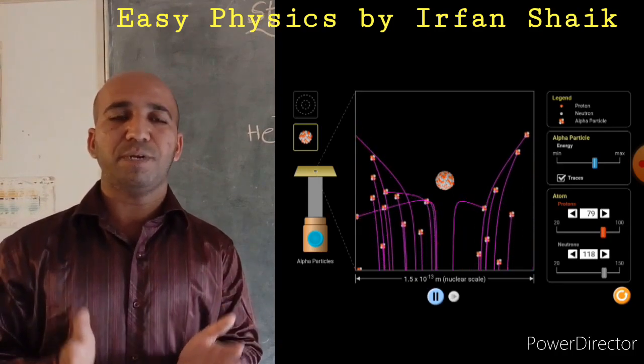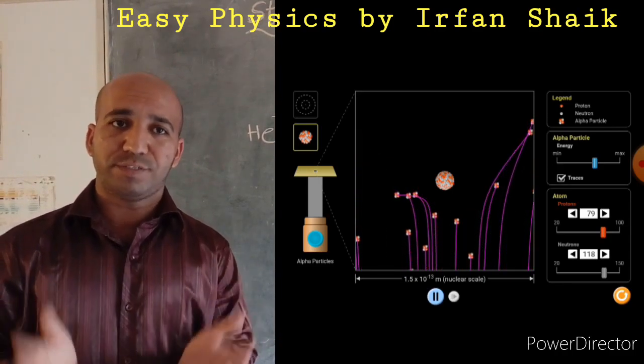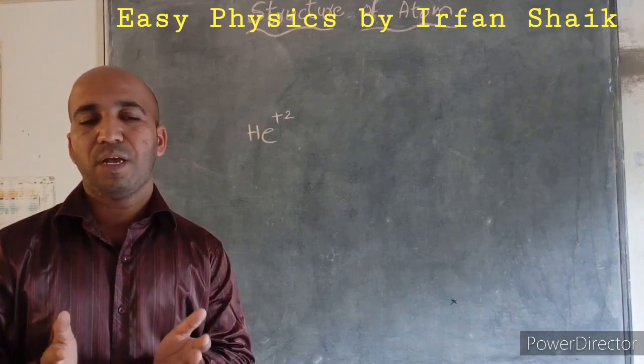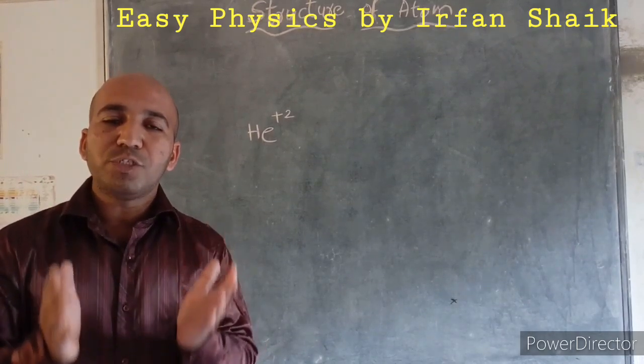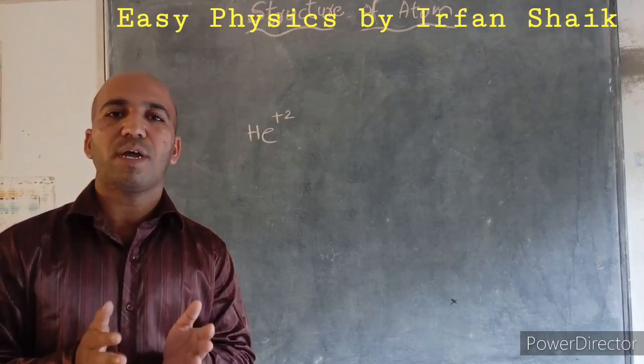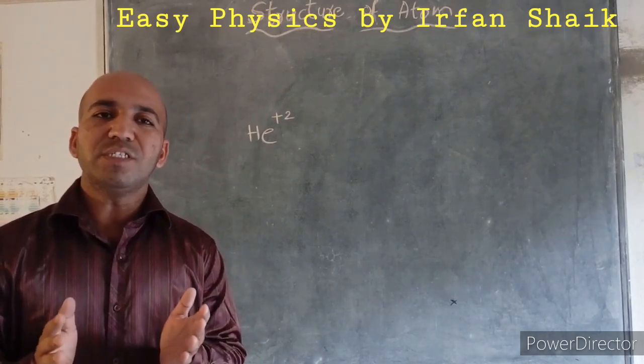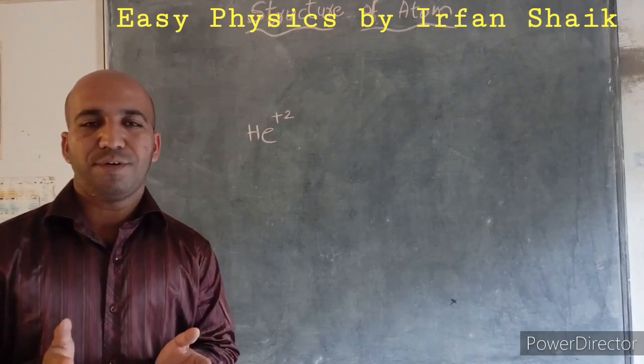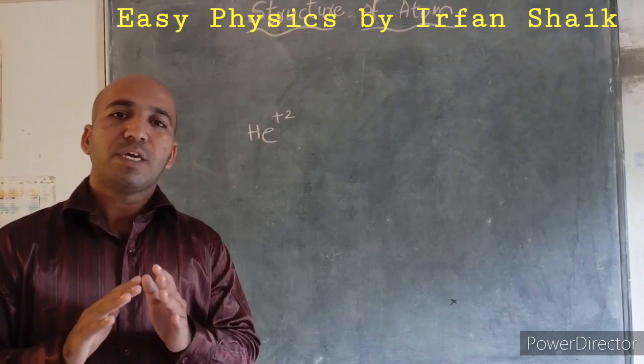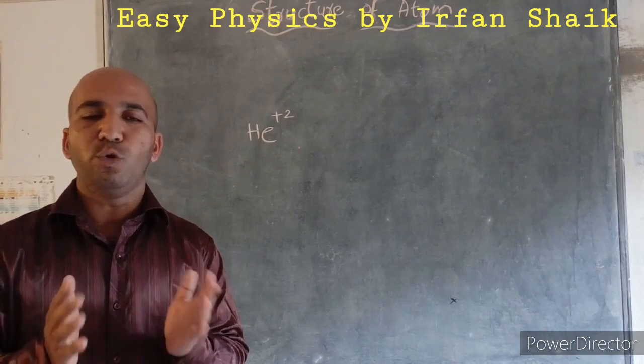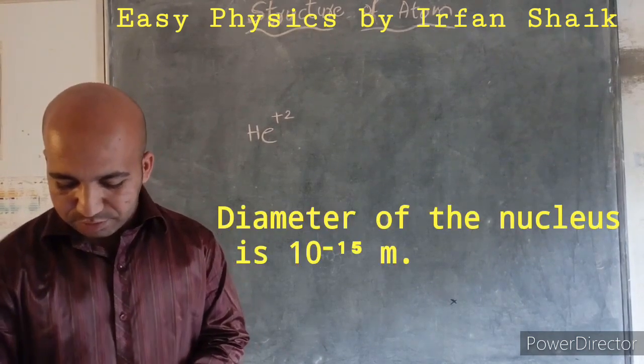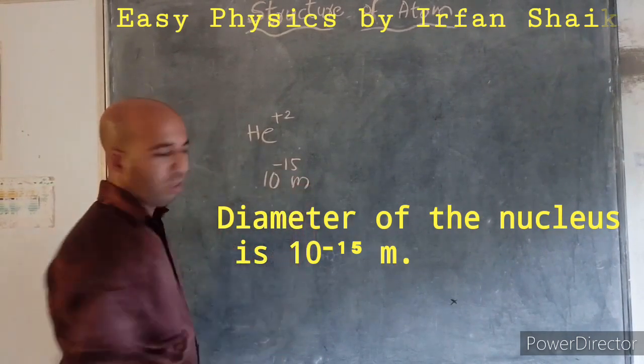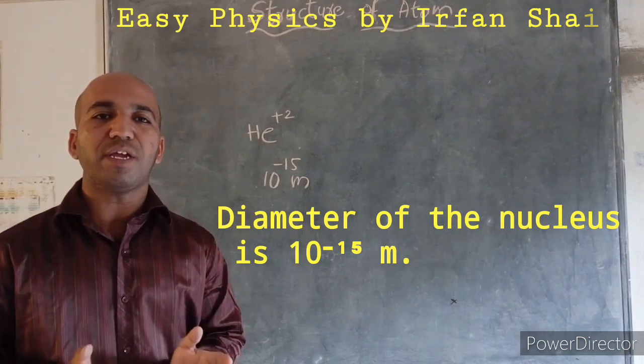So by this experiment, he has concluded that an atom has positive charge at its center. And this positive charge at its center is called as nucleus. That means, the presence of nucleus has been discovered by Rutherford. And he also estimated the diameter of the nucleus. So the diameter of the nucleus is 10 to the power of minus 15 meters.